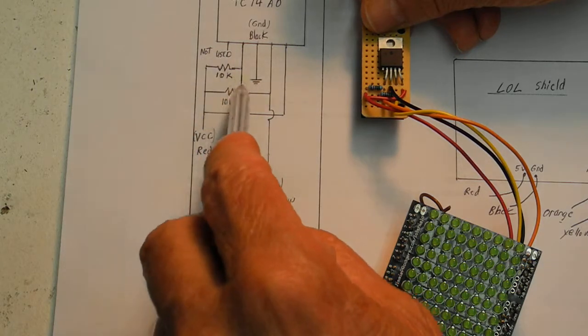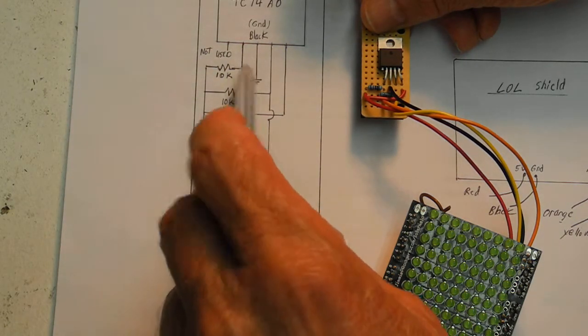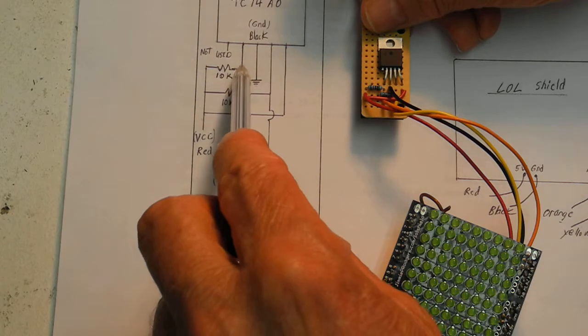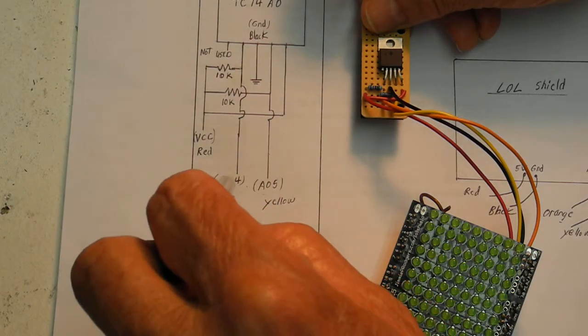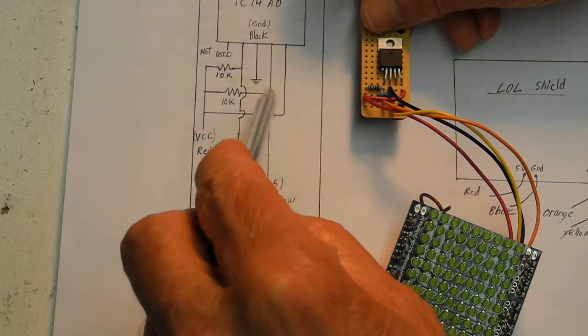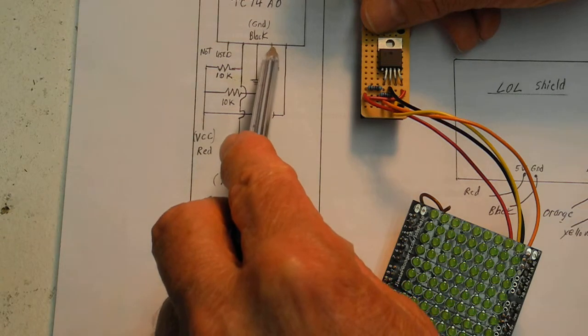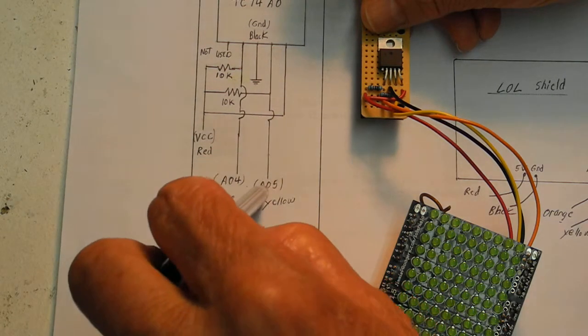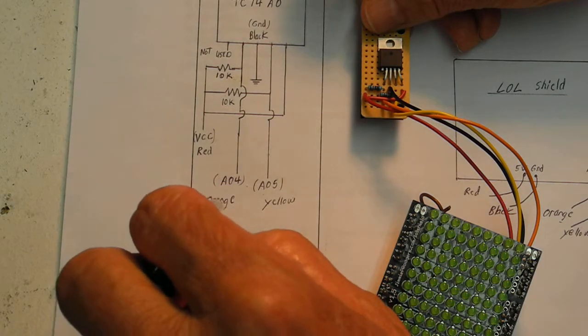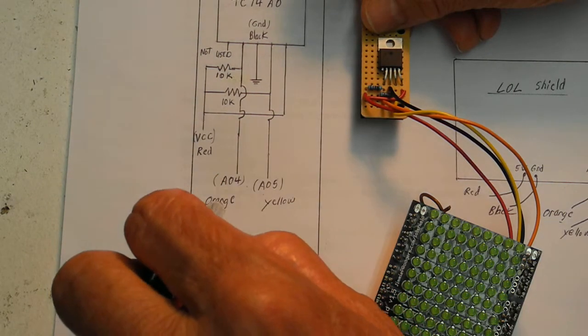Okay then here, this is analog 4 you hook into here. And here is analog 5. And that's yellow. And then analog 4 was orange.